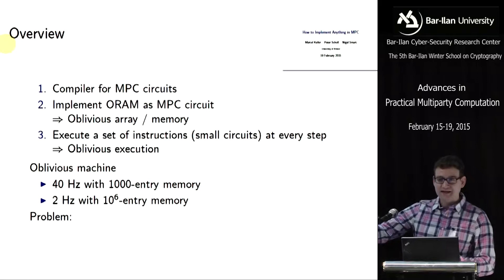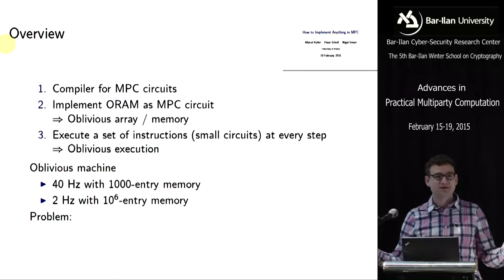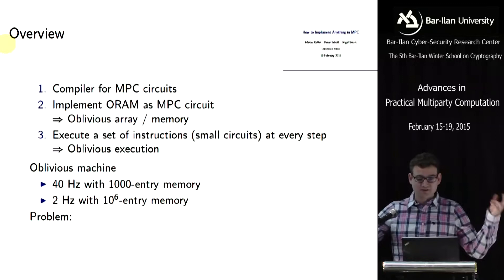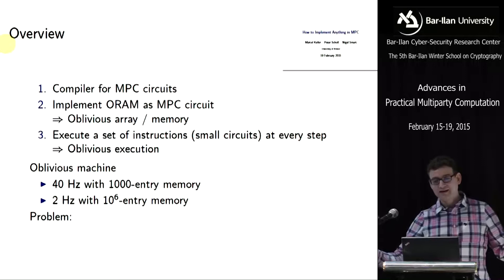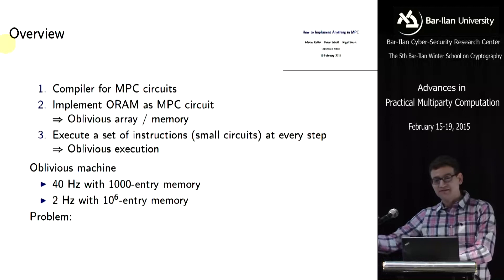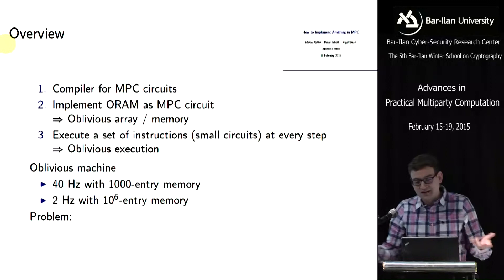In the last step — and the last step is actually the smallest one — if you take a set of CPU instructions, so whatever addition, multiplication, a bit of branching and comparison and so on, all of that can be represented as a small circuit. We have a model where every step we execute all of them and with some secret variable select the results. So we now have oblivious memory and oblivious execution, and in connection with oblivious arrays this essentially gives us an oblivious machine, or you could say an oblivious CPU.